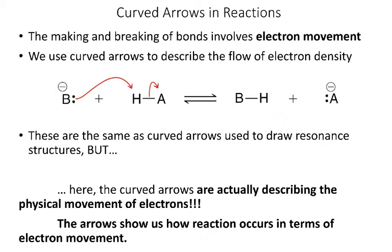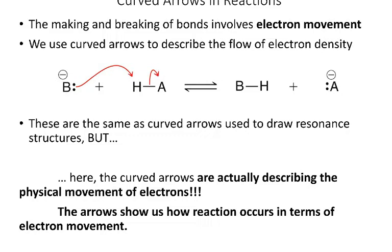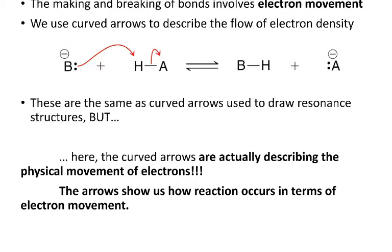These curved arrows should look similar to those used when drawing resonance structures. The big difference is that in resonance structures, the electrons aren't actually moving — the electronic structure is a combination of all resonance hybrids. But when we draw these mechanisms, this does represent a physical change; it shows how the flow of electrons occurs in the mechanism of the reaction.